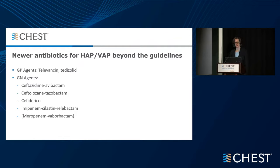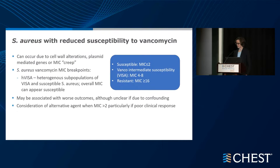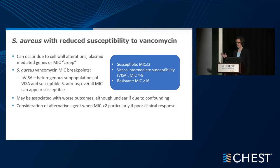The agents to discuss include gram-positive agents televancin and tedizolid, plus six gram-negative agents. For Staph aureus and gram-positive agents beyond vancomycin and linezolid, one indication would be Staph aureus with reduced susceptibility to vancomycin, which can occur due to cell wall alterations, plasmid-mediated genes, or MIC creep. When the MIC increases to the four-to-eight range, this is termed VISA — vancomycin intermediate susceptibility — associated with worse outcomes in HAP/VAP, though confounding by severity of illness is possible. An alternative would be considered when MIC is over two, particularly with poor clinical response.